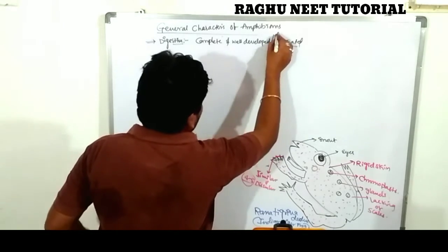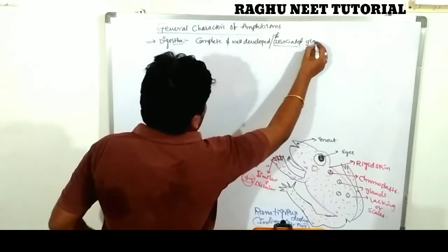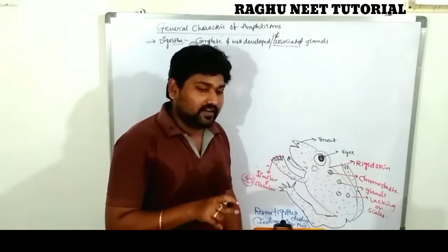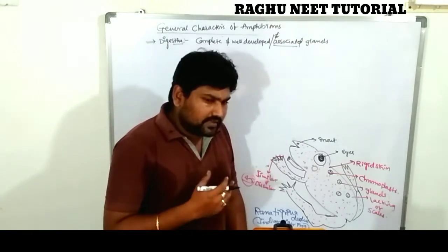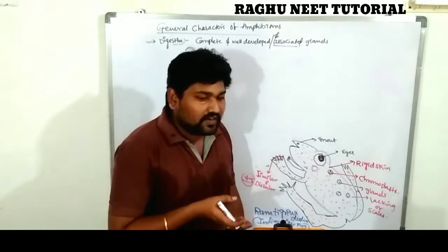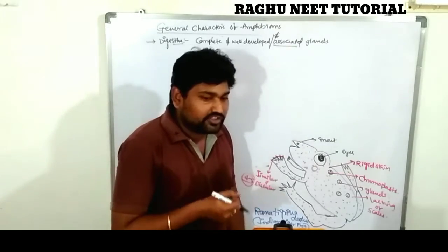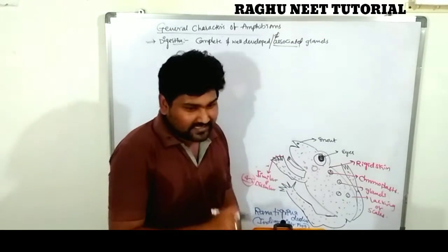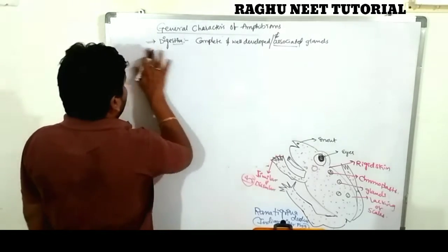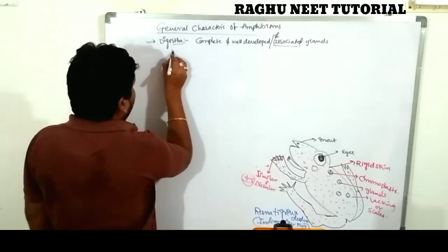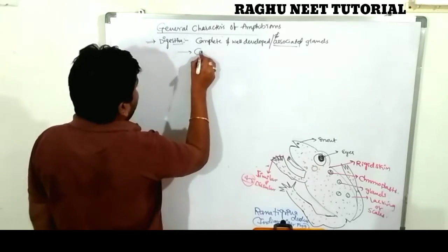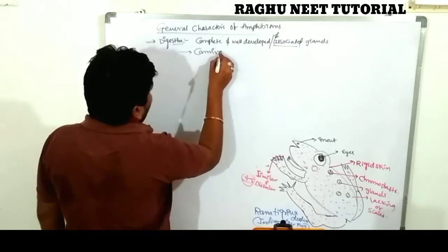The associated glands are essential for converting complex food into simple substances. These glands are called associated glands. Amphibians are carnivorous in nature.